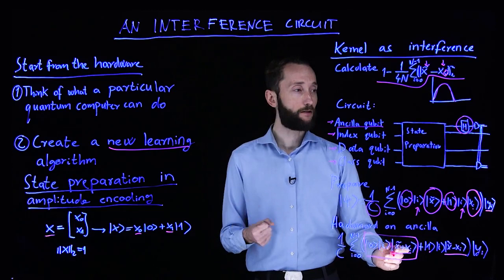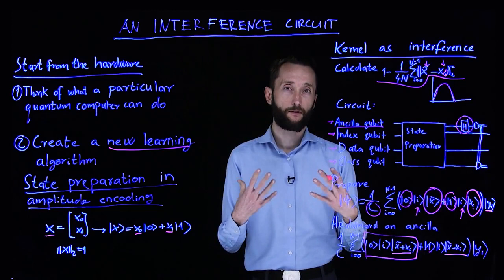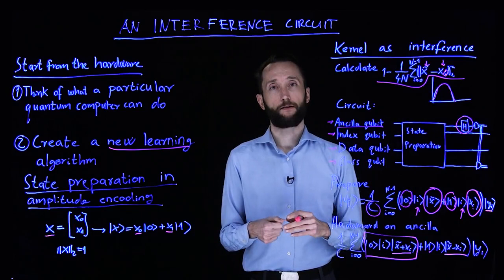And if we get this result, so we collapse it to this particular outcome, then we do a measurement on the class qubit as well. And the probability of getting certain results here will create you exactly this kernel.